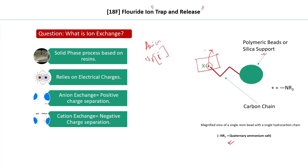Based on what we are trying to separate, we choose the appropriate charge. If we want to exchange an anion, we use a positive charge on the bead. If we want to exchange a cation, we use a negative charge. So the charge is selected based on the ion of concern.